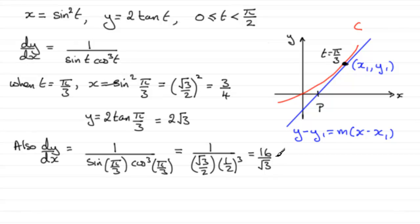So we've got our values of x₁, y₁ and the gradient m at the point T equals π/3. So now we can just go for the equation of the tangent. So we can say that therefore equation of tangent is,